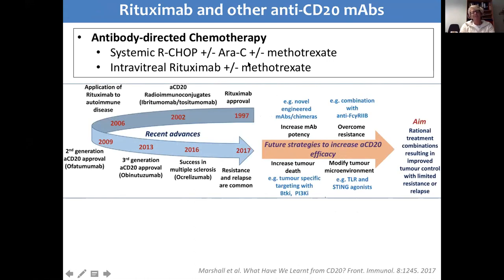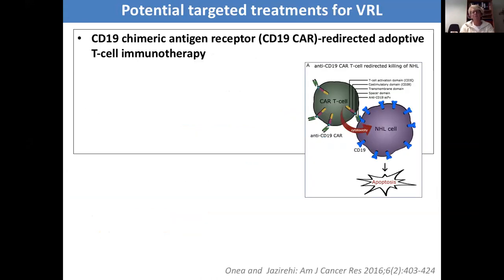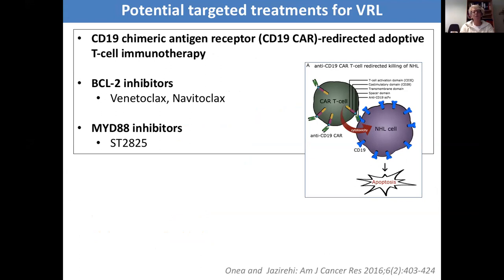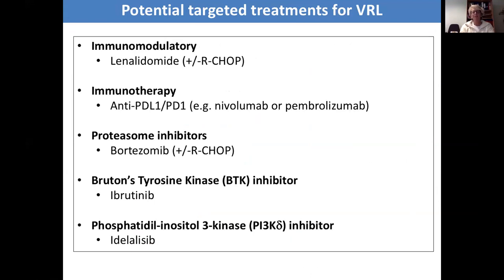The anti-CD20 antibodies are approximately 30 years old and there are great developments in designing new anti-CD20 antibodies to overcome any resistance which may develop under therapy by tumour cells. New treatments coming out include CAR therapy being considered in CNS lymphomas, as well as BCL-2 inhibitors and MYD88 inhibitors demonstrated in vivo in CNS lymphoma trials. Immunotherapy is also being applied in CNS lymphomas and is being considered in vitreoretinal lymphomas.